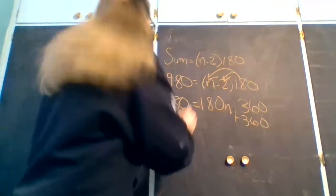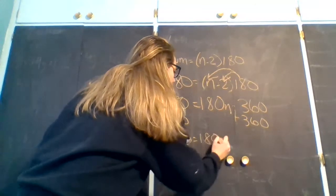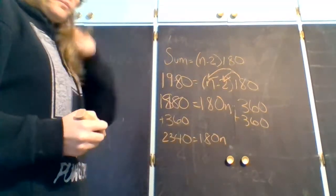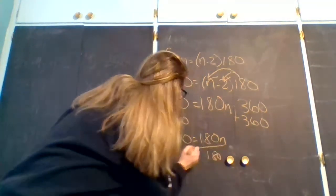So then we have 2,340 equals 180n, and then in order to get n by itself, divide.